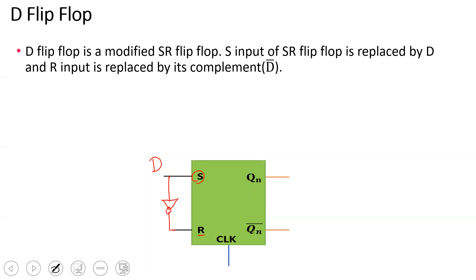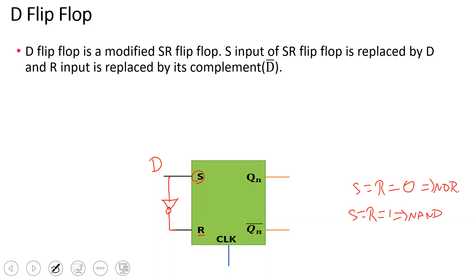So the D flip-flop input is going to be D. When we look at the SR flip-flop, there is an ambiguity — that is, when S is equal to R is equal to 1. The circuit uses NAND gates.